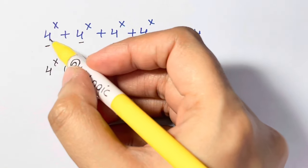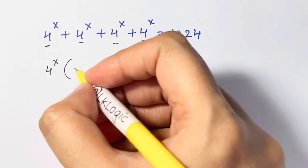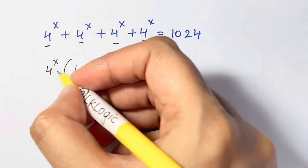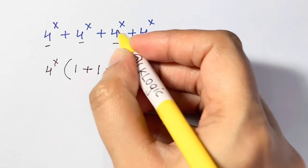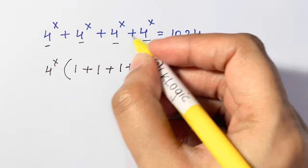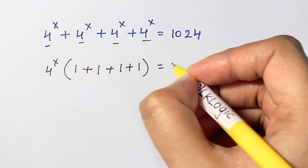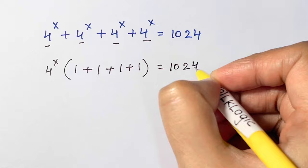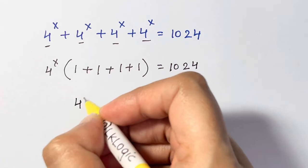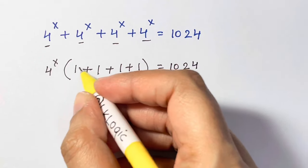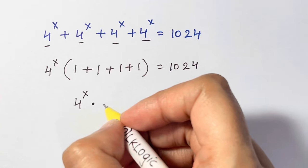So what is left with me? 4 to the power of x divided by 4 to the power of x is 1. This divided by this, again 1. This divided by this, 1, and again 1 is equal to 1024. And that's equal to 4 to the power of x times 1 plus 1 plus 1 plus 1, that's 4, is equal to 1024.